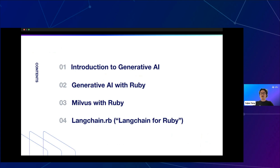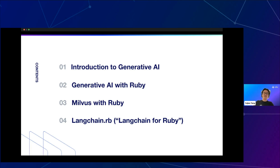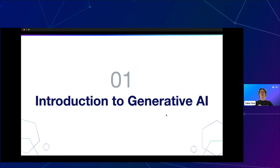Let's cover today's agenda. We'll start with an introduction to generative AI — covering neural networks, vector embeddings, and vector search. Then we'll go into generative AI with Ruby, where Andre will explain why these two go together. We'll cover Milvus with Ruby — Andre built the Ruby SDK for Milvus. Finally, we'll cover LangChain.rb, Andre's Ruby port of LangChain, with demos.